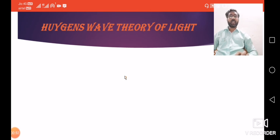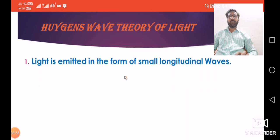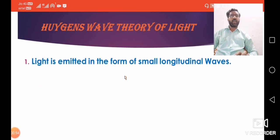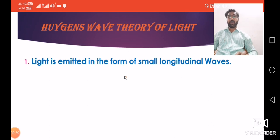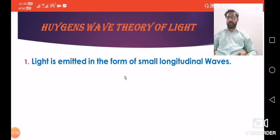Now, which are the different characteristics and points of this theory that we have to study? Look at the first point: light is emitted in the form of small longitudinal waves. Huygens told that light is in the form of small longitudinal waves.